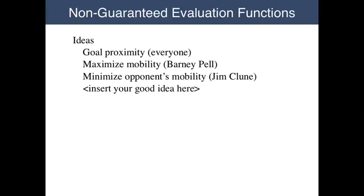Goal proximity is one of those. Proponents of this heuristic argue that, all other things being equal, it's a good idea to prefer states that are closer to goal states than states that are farther away. Distance here is usually judged by similarity between states — that is, the number of facts in common in the descriptions of the two states. Mobility is another general heuristic. Proponents argue that, all other things being equal, it's better to move to a state that affords the player greater mobility — that gives it more possible actions. Better than being boxed into a corner. Symmetrically, proponents of mobility argue that it is good to minimize the mobility of one's opponents.